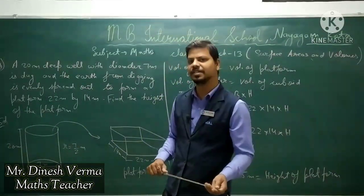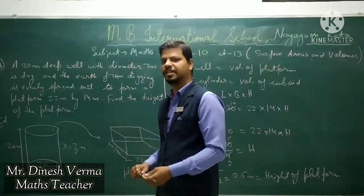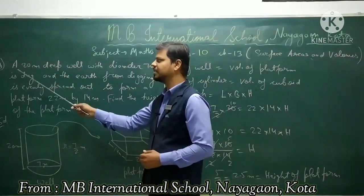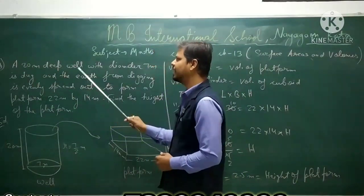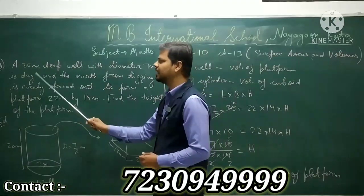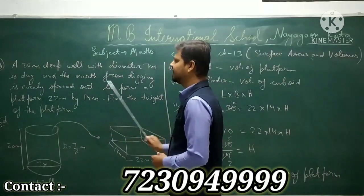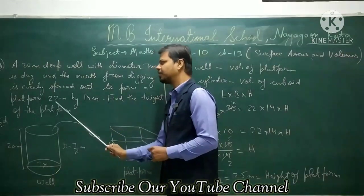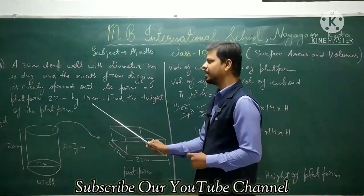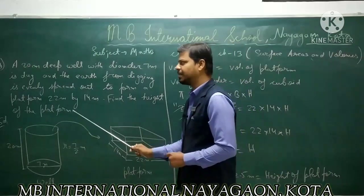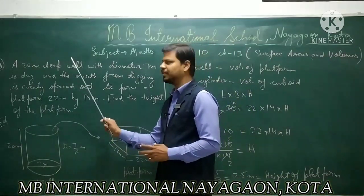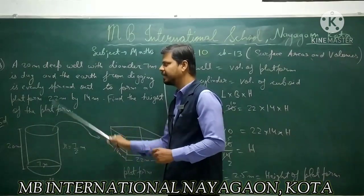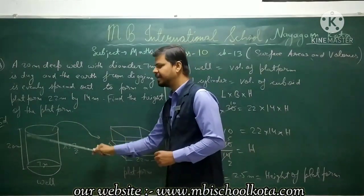Hello students. In our previous video we discussed some questions related to surface area and volume. In this video we also discuss a question. A question is given: a 20 meter deep well with diameter 7 meter is dug, and the earth from the digging is evenly spread out to form a platform of 22 meter by 14 meter. Find the height of the platform.